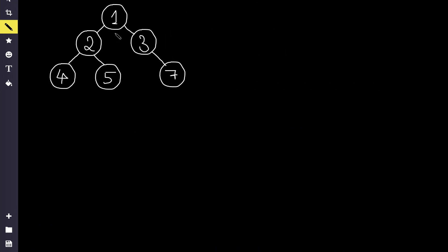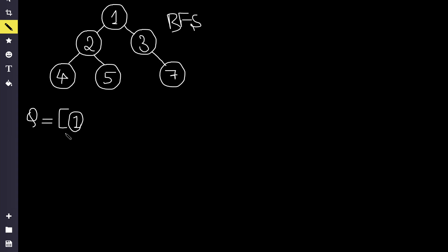We need to join all the levels together, so we have to do level order traversal. We will use BFS to solve this question. To solve a BFS problem we generally need a queue, in which we initially keep our root node. We run a while loop until the queue becomes empty. Inside, we traverse each element using a for loop, because we have to traverse the entire level in a single iteration.